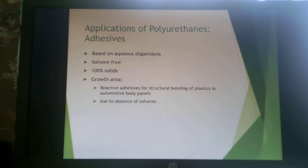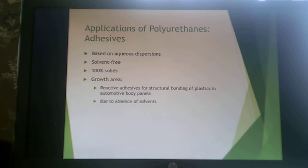Adhesives made from polyurethanes are usually based on aqueous dispersions — solvent-free, 100% solids — and this is a big growth area for polyurethanes. These reactive adhesives can be used for structural bonding of plastics and automotive body panels, which is really advantageous due to the absence of solvents, so no VOCs are created but you still get a good bond.